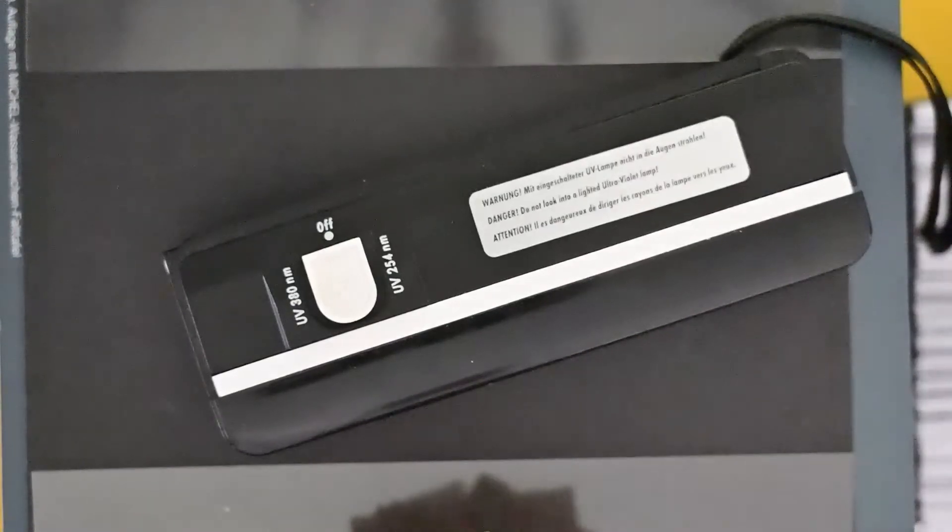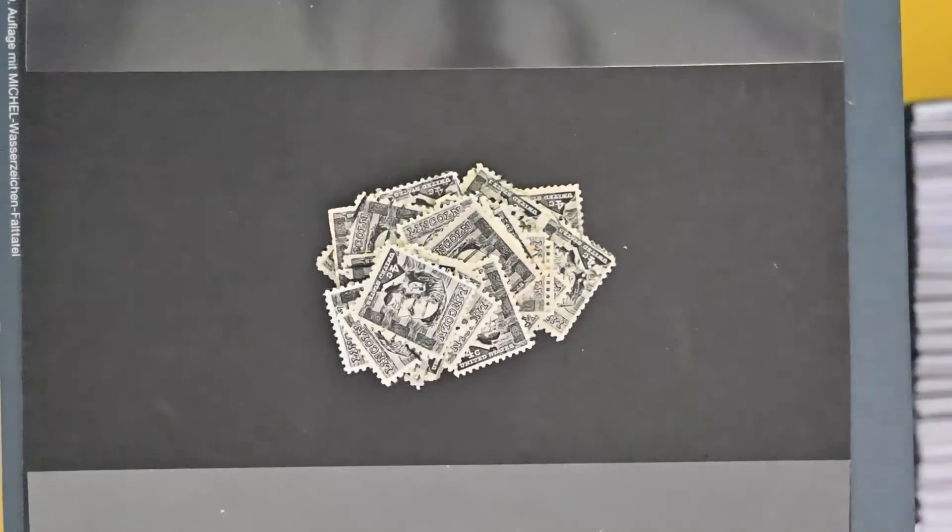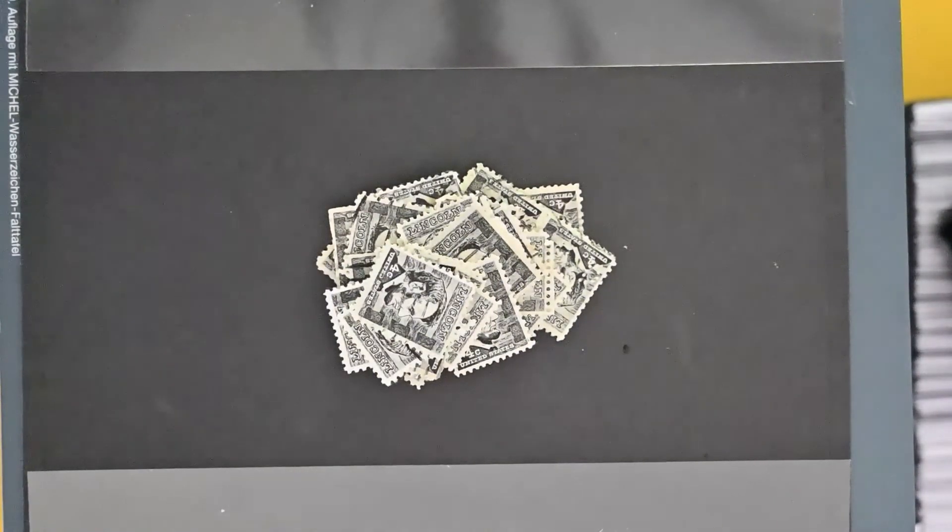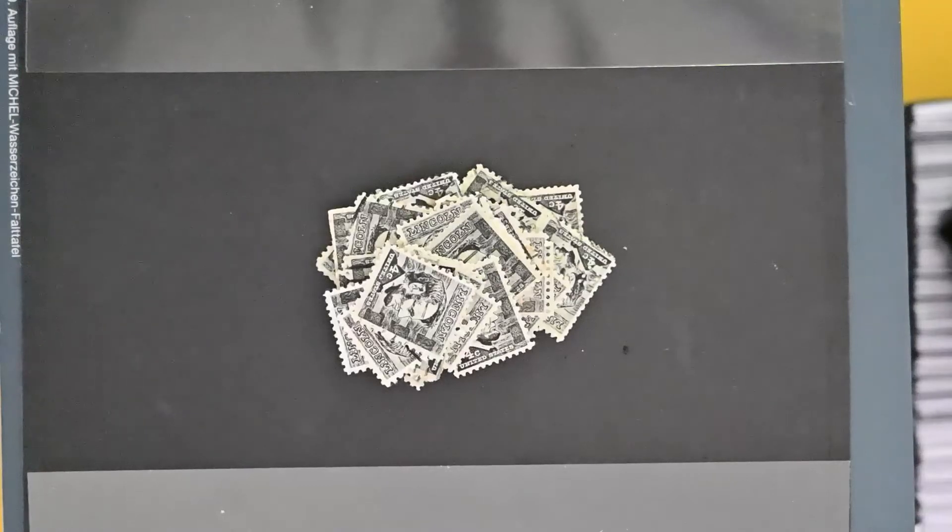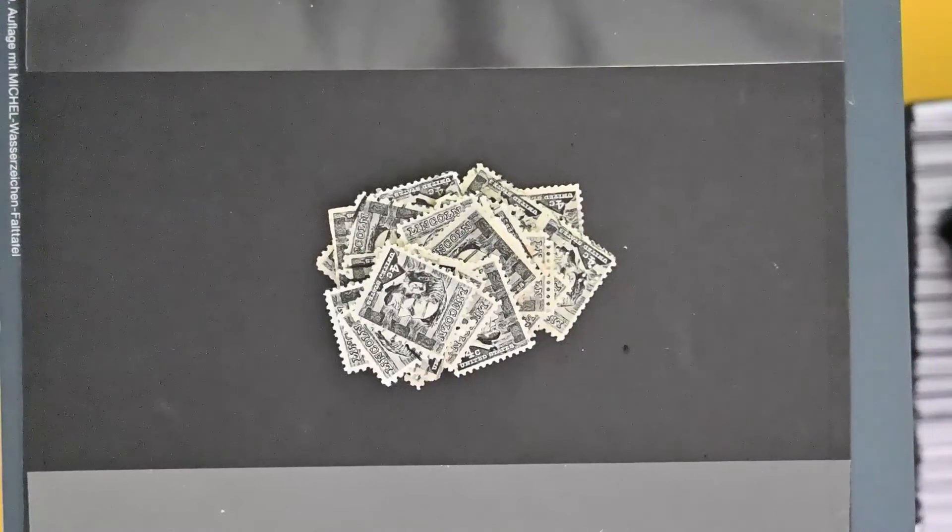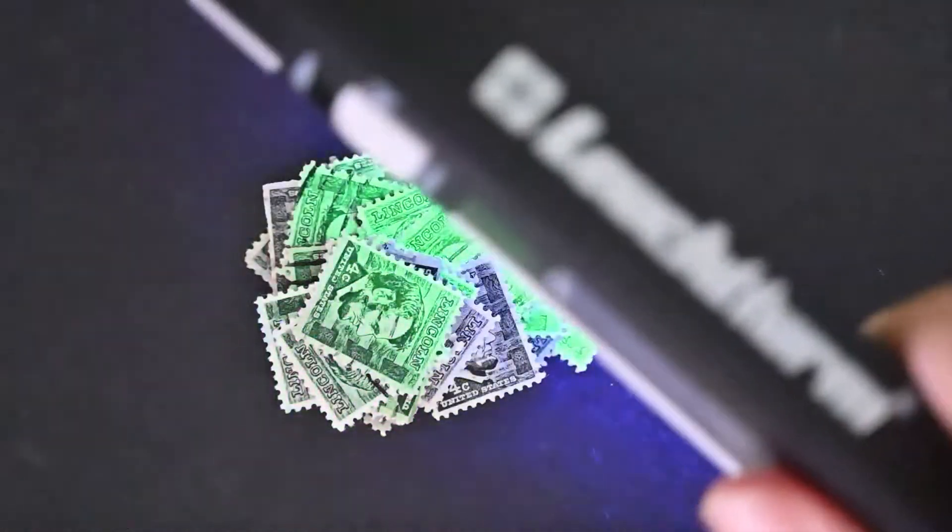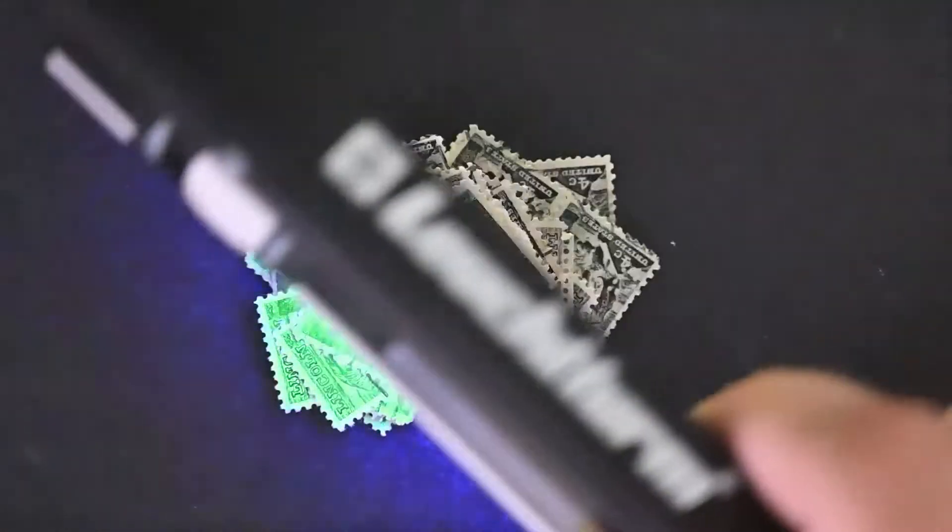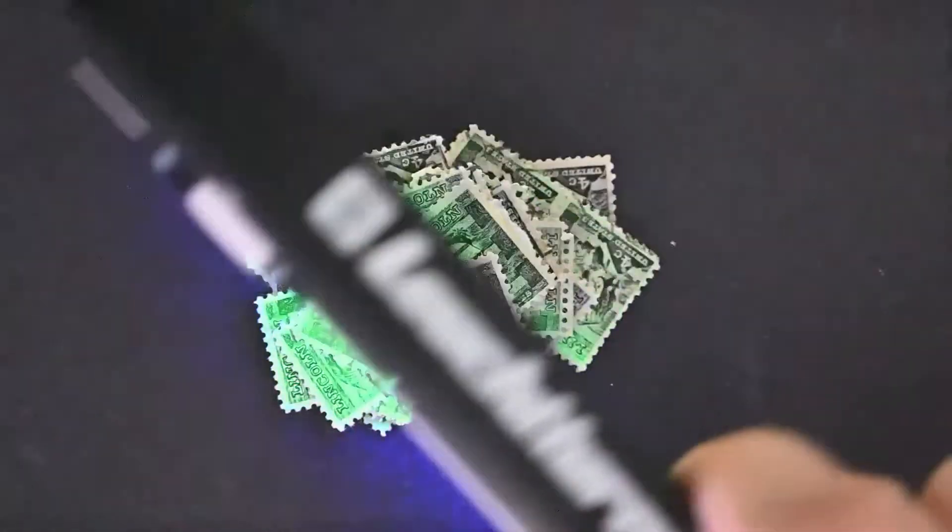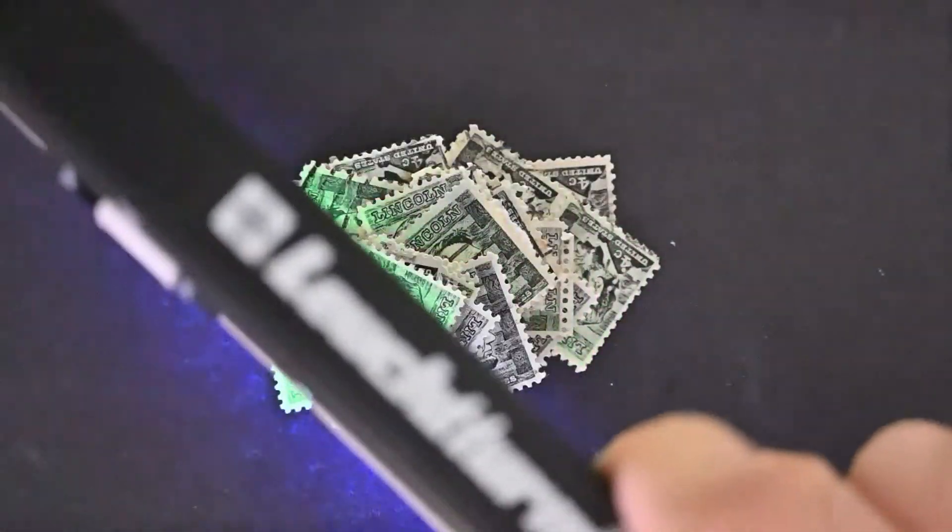I have a giant pile of these four cent Lincolns. And they come in both tagged and untagged varieties. And I figure it was about time to sort through them. These are Scott 1282 and 1282A. 1282A being the tagged or fluorescent ones. There's different types of tagging, but on this stamp it's just one type, which is overall tagging.